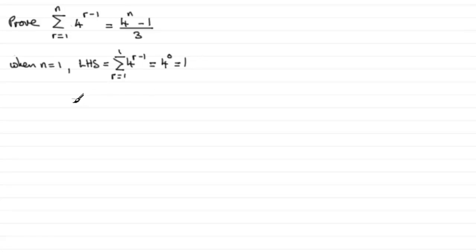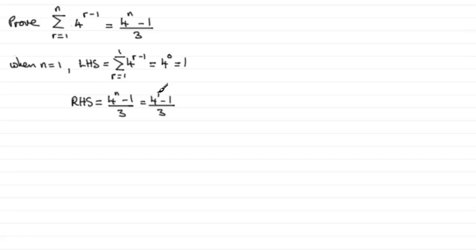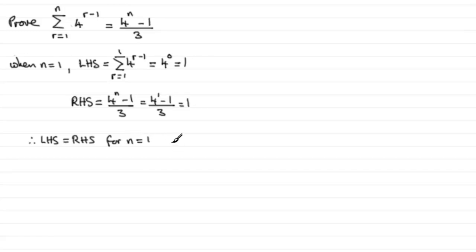We now check out the right hand side, RHS, and we've got 4 to the power n minus 1, all divided by 3. So when n equals 1, this is going to be equal to 4 to the power 1 minus 1, all divided by 3. 4 to the power 1 is 4, take away 1 is 3, and 3 divided by 3 is 1. So clearly the left hand side is equal to the right hand side when n equals 1. So it's true for n equals 1.